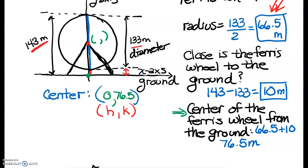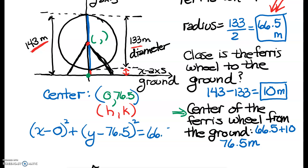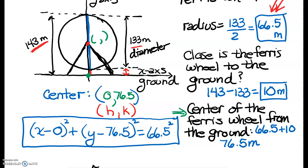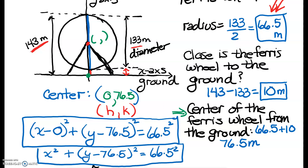Let's write that equation by plugging h, k, and r into our standard equation: (x − 0)² + (y − 76.5)² = 66.5². I'll simplify it a little bit since x − 0 is just x, but I don't need you to expand everything — I'd like it written in standard circle form. This example is how you should work problems 41 and 42, which both have ferris wheels standing off the ground with the bottom of the circle above the ground.